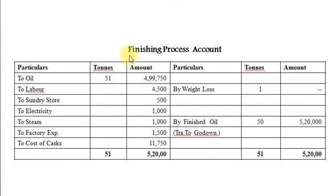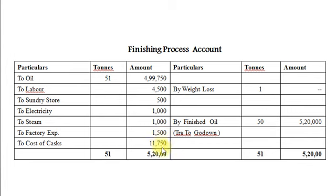Now we will prepare the finishing process account. On the debit side, refined oil transferred: 51 tons, Rs. 4,99,750. Other cost elements: labor cost Rs. 4,500, sundry stores Rs. 500, electricity Rs. 1000, steam Rs. 1000, factory expenses Rs. 1500, and cost of cash Rs. 11,750.